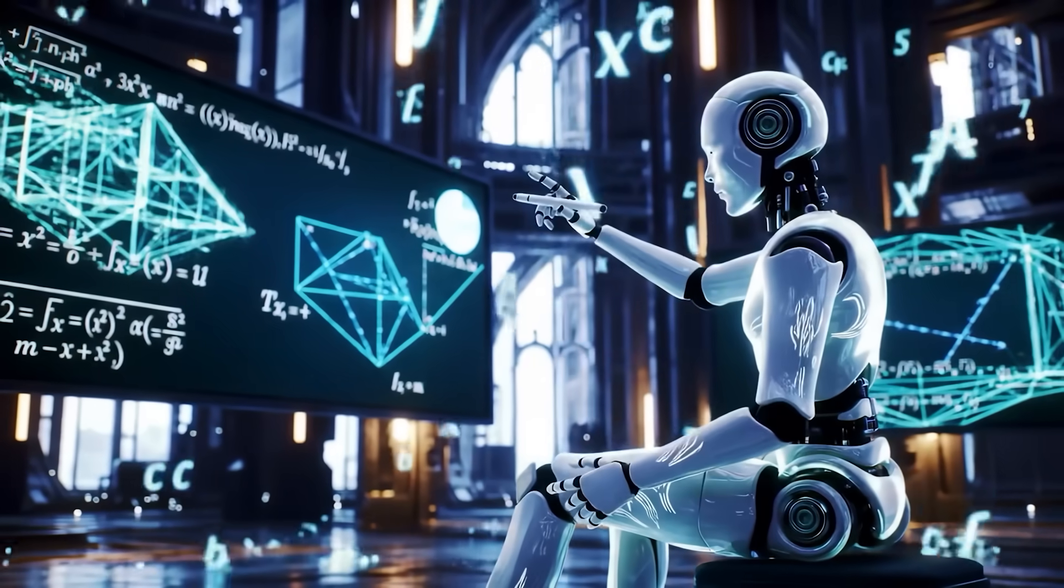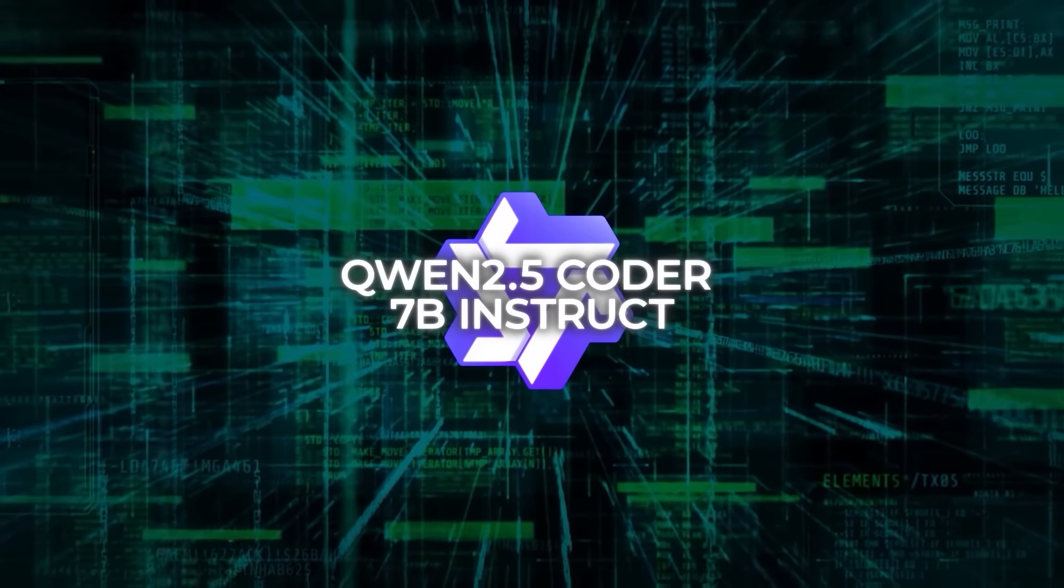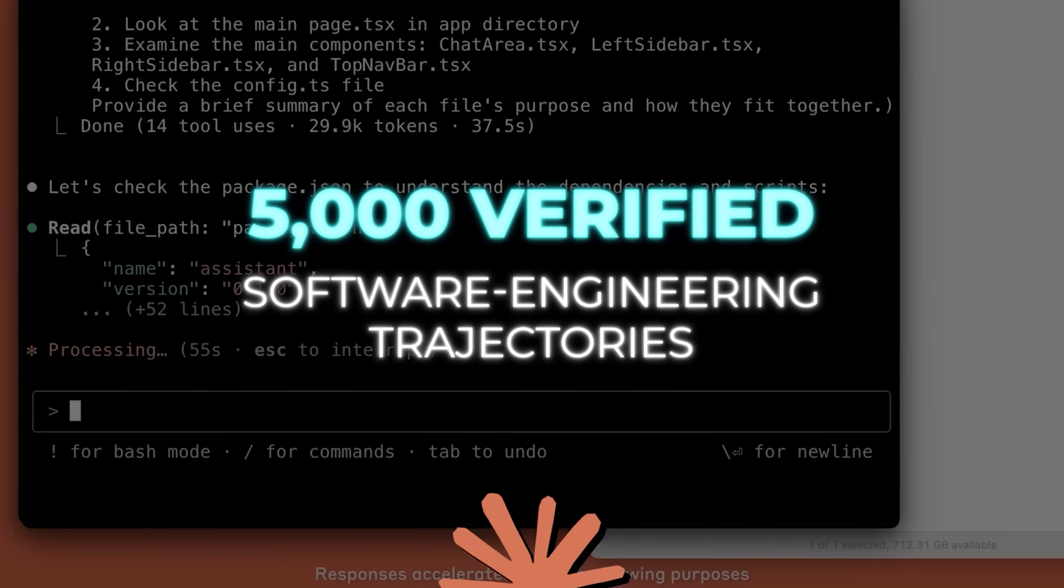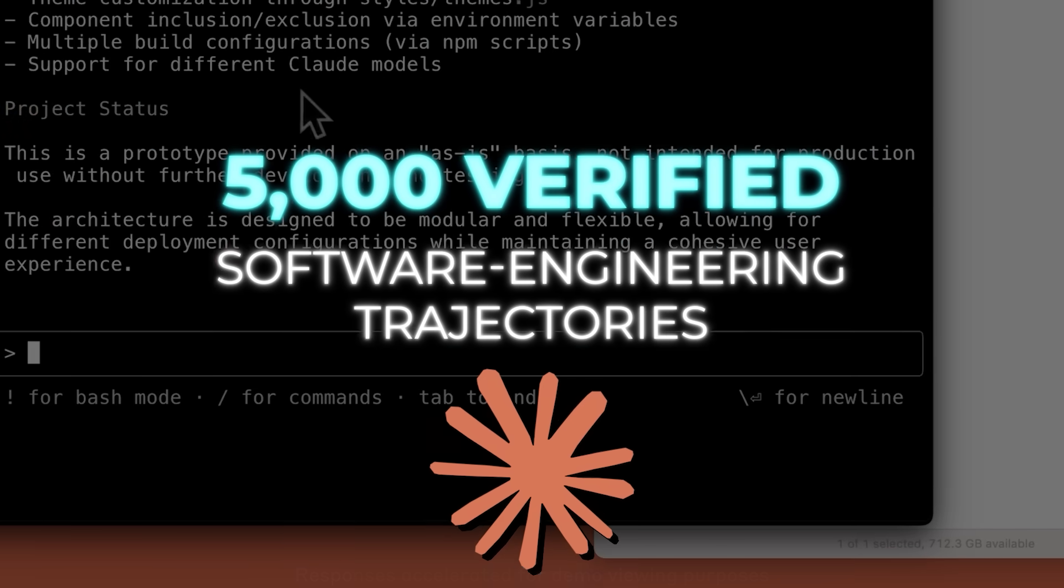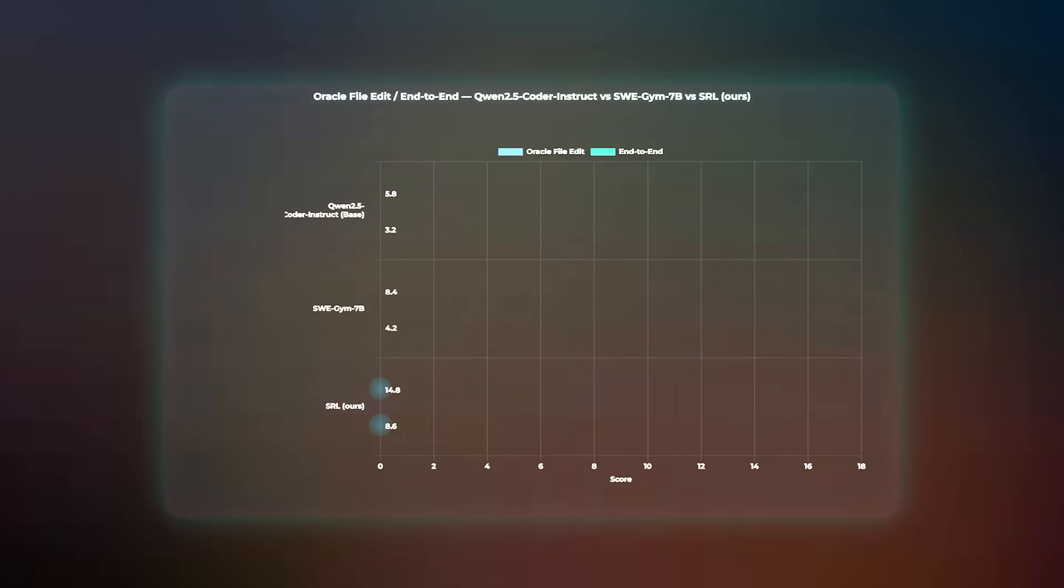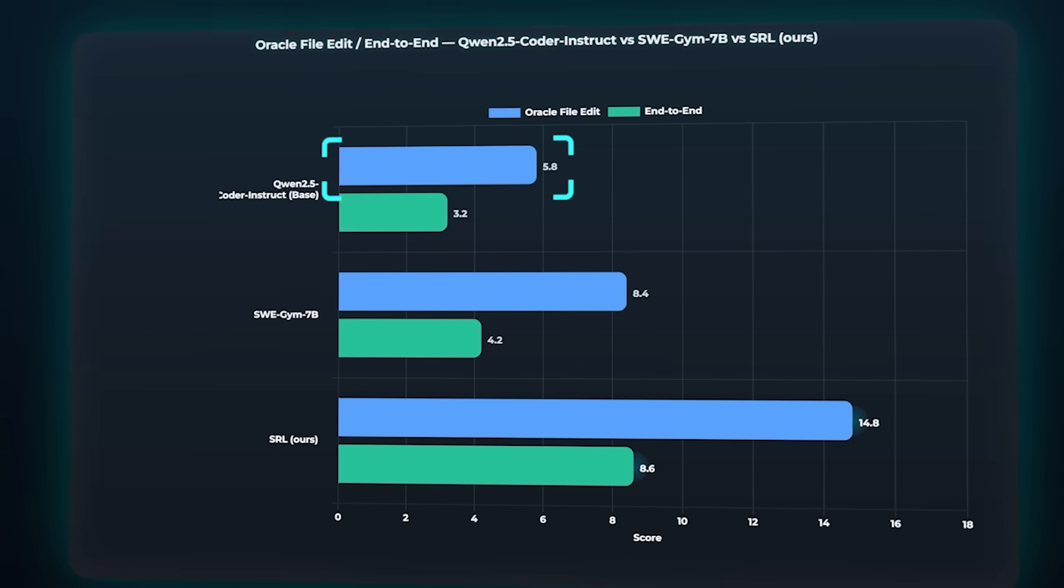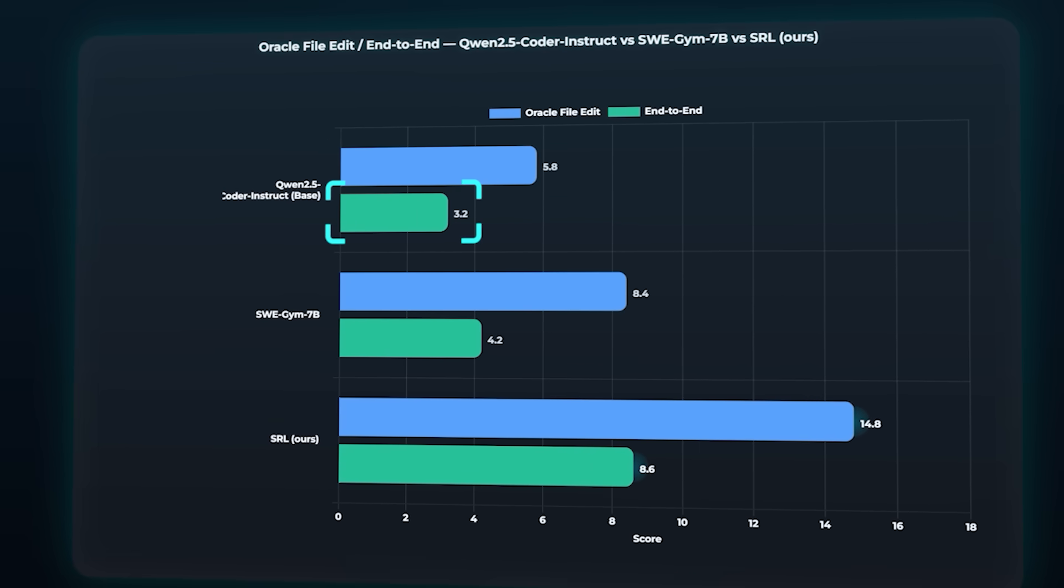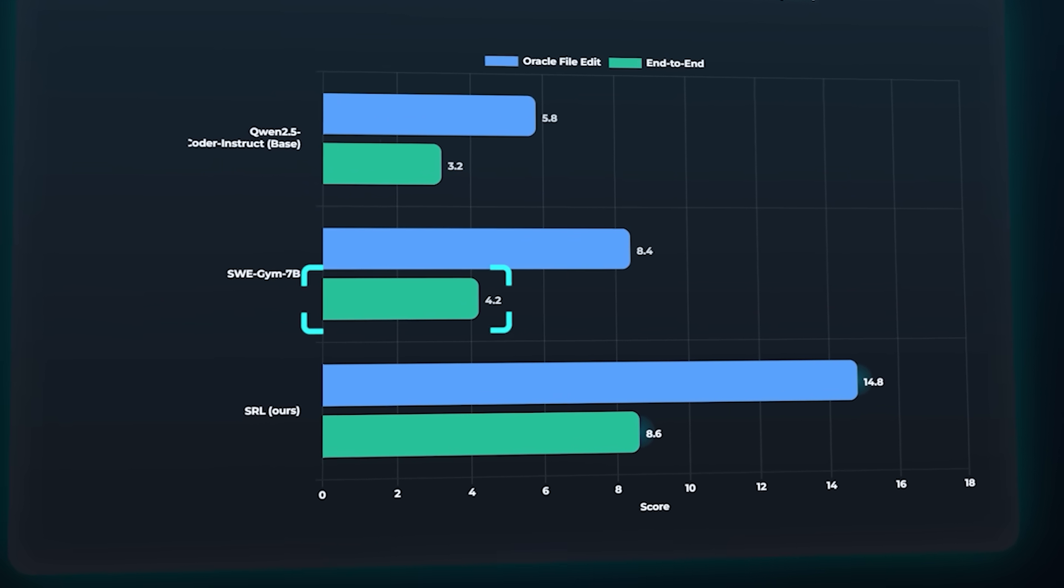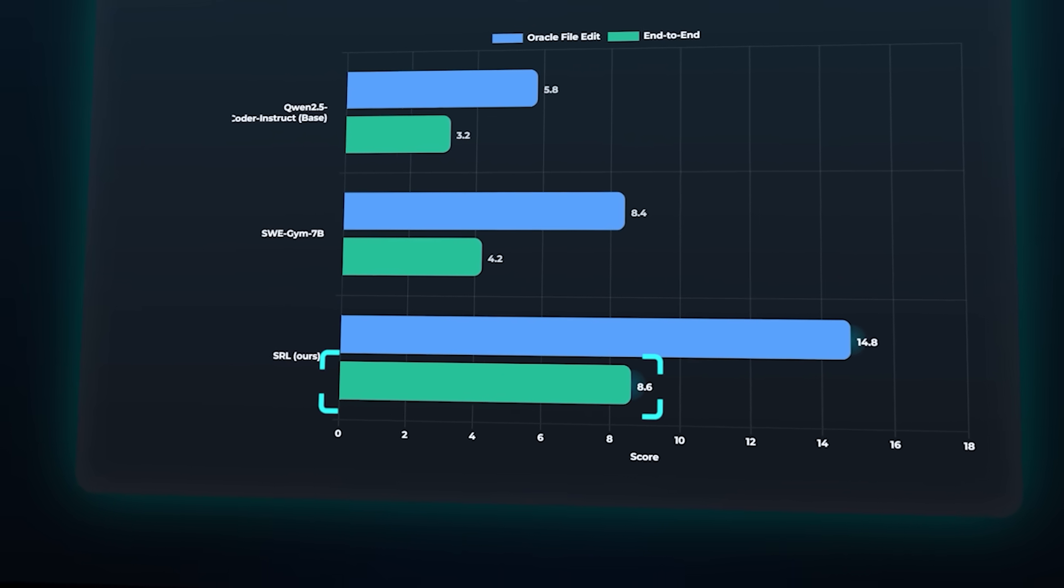It's not just math, either. They also tested SRL on code reasoning with Qwen 2.5 Coder 7 billion Instruct. They took 5,000 verified software engineering trajectories generated by Claude 3.7 Sonnet, broke them down into 134,000 stepwise examples and trained on those. On SWE Bench Verified, the base model got 5.8% in Oracle file edit mode, 3.2 end-to-end. The SWE GYM 7 billion baseline hit 8.4 and 4.2. SRL blew past both 14.8 and 8.6%, roughly double the base model.